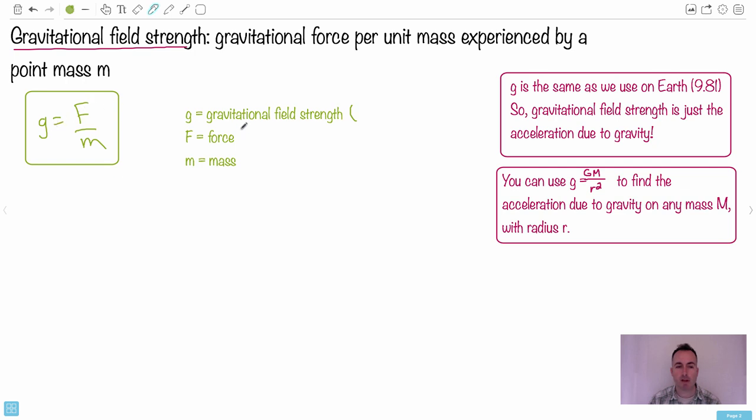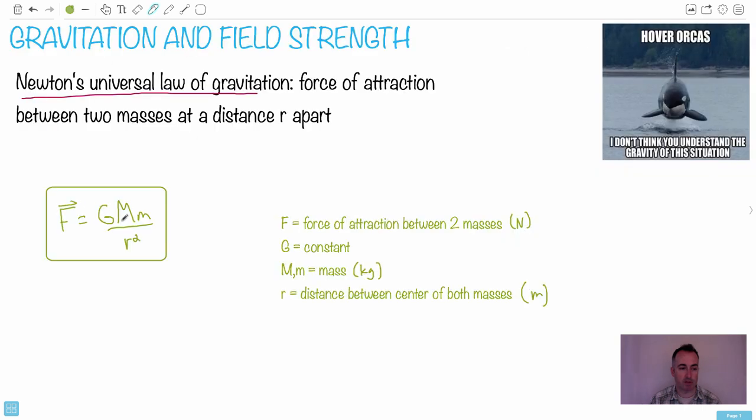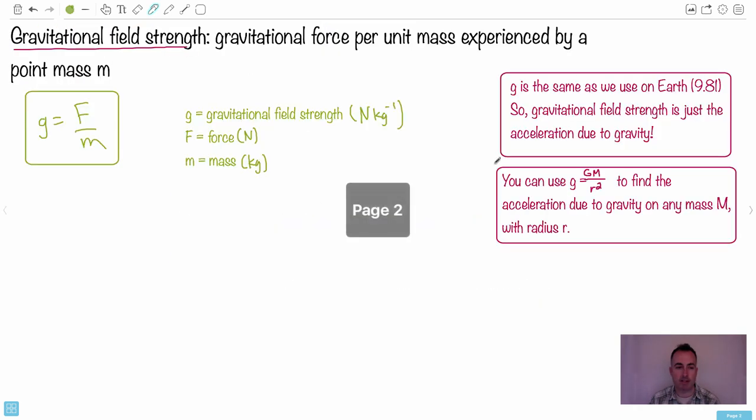Let's look at this and put in units. Gravitational field strength - it's based on force measured in Newtons and mass measured in kilograms. If you don't know the units, think carefully. It should be Newtons per kilogram. You can also use this equation we just had before.